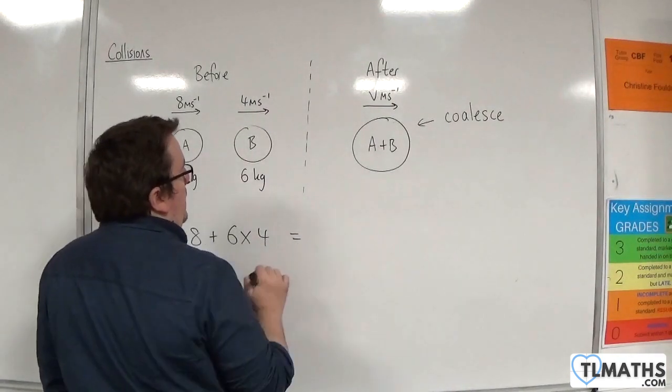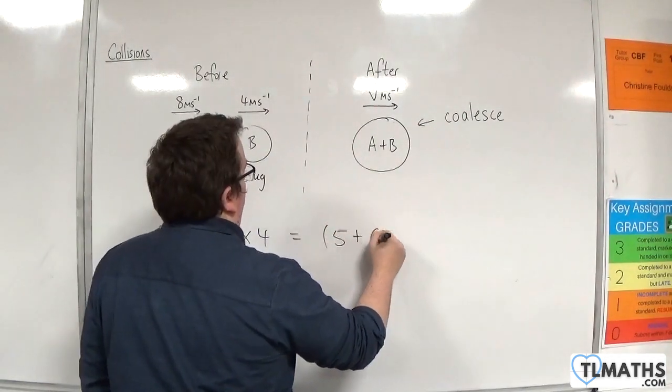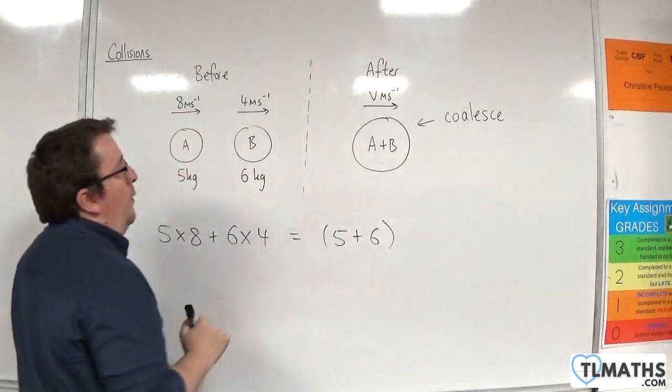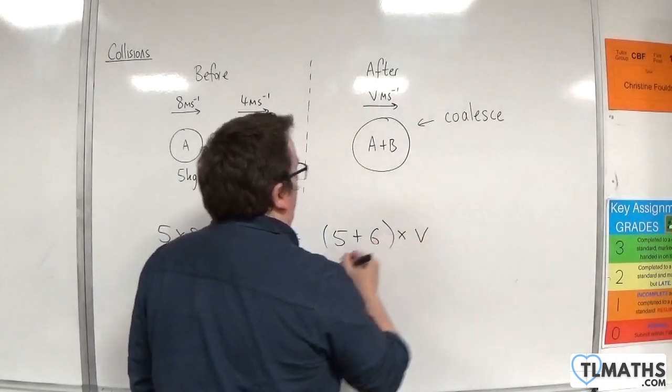So, the total momentum afterwards will be the sum of your masses. So, the coalesce particle will have a mass of 11 kilos, and that's being multiplied by its velocity.